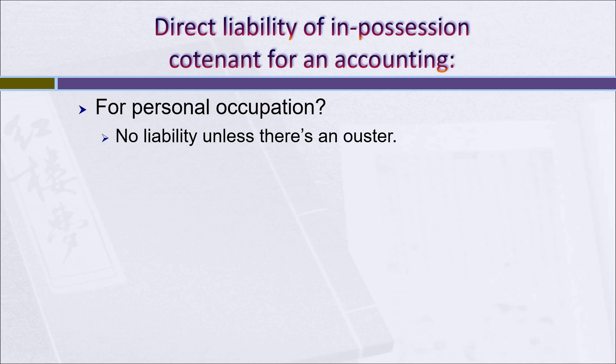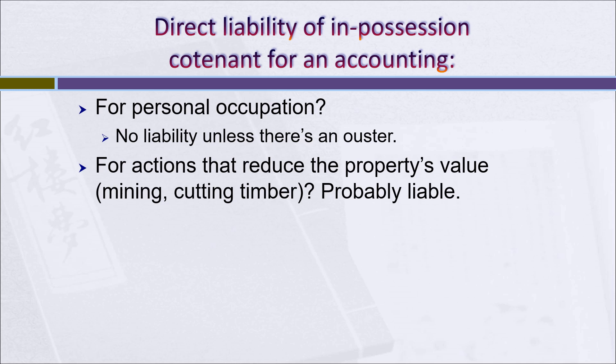Unless there's an ouster — and we'll talk about ouster in a few minutes — there's no liability for personal occupation of the property. What about if the co-tenant engages in actions that reduce the property's value, such as mining the minerals or cutting the timber or doing something else that makes the property go down in value? Well, they're probably going to be held liable for the loss in value and have to pay the out-of-possession co-tenants their share of that reduction in value.